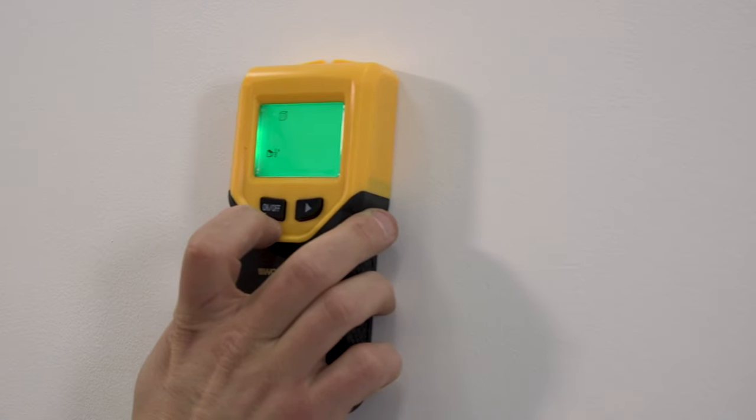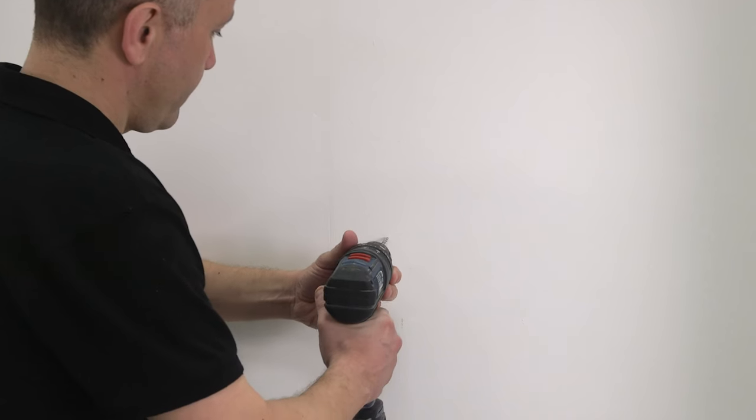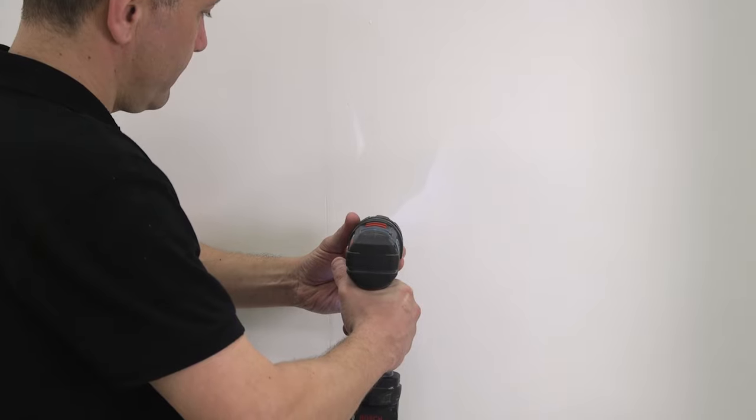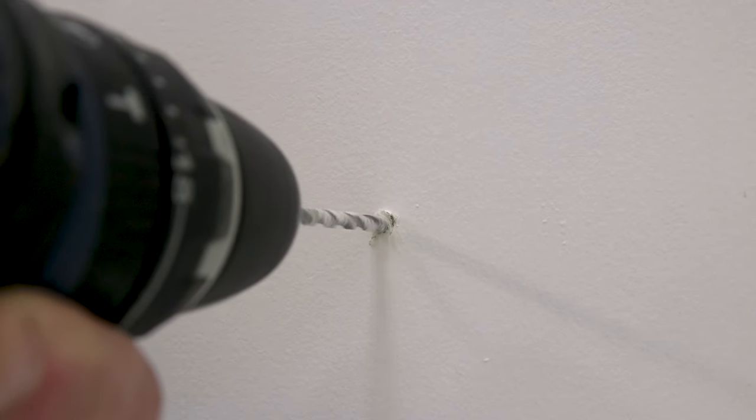Before drilling, make sure you check for wires and pipes. Then drill the holes into the wall and add the wall plugs, tapping in with a hammer if necessary.